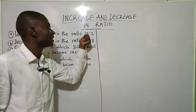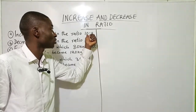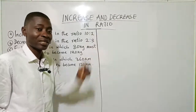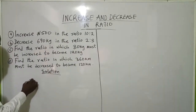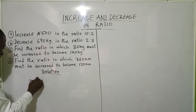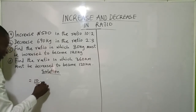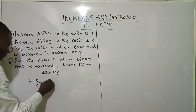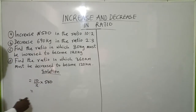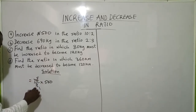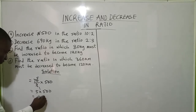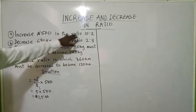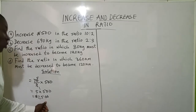Look at the bigger quantity — the one that is bigger. Looking at 10 and 2, 10 is greater than 2. So since we want to increase 500 in this ratio, we will say 10 over 2 times 500. That gives us 5 times 500. 5 times 5 is 25, so if I am going to increase 500 in the ratio 10:2, my answer is going to be 2500.